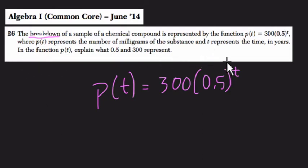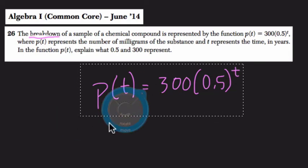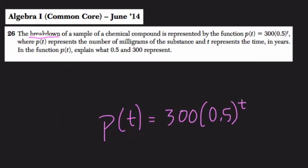In the function, explain what 0.5 and 300 represent. So I'm going to move this down for a second. Okay, so let's just go over what they told us. They told us that P(t) is a function. It represents the milligrams of the substance, milligrams of the chemical substance.